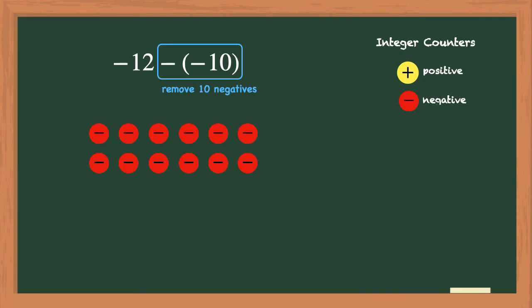So let's remove those 10 negative counters. And then after they are gone, we just count how many counters remain. And we have two red counters left, so the answer is negative 2.